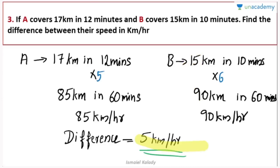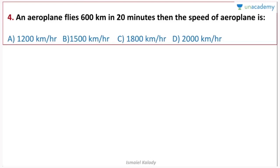The speed: an aeroplane flies 600 km in 20 minutes. Then the speed of the aeroplane is... Now if you look at the options, the speed is 1 ms. We are going to take the aeroplane to 20 minutes — that's the question.